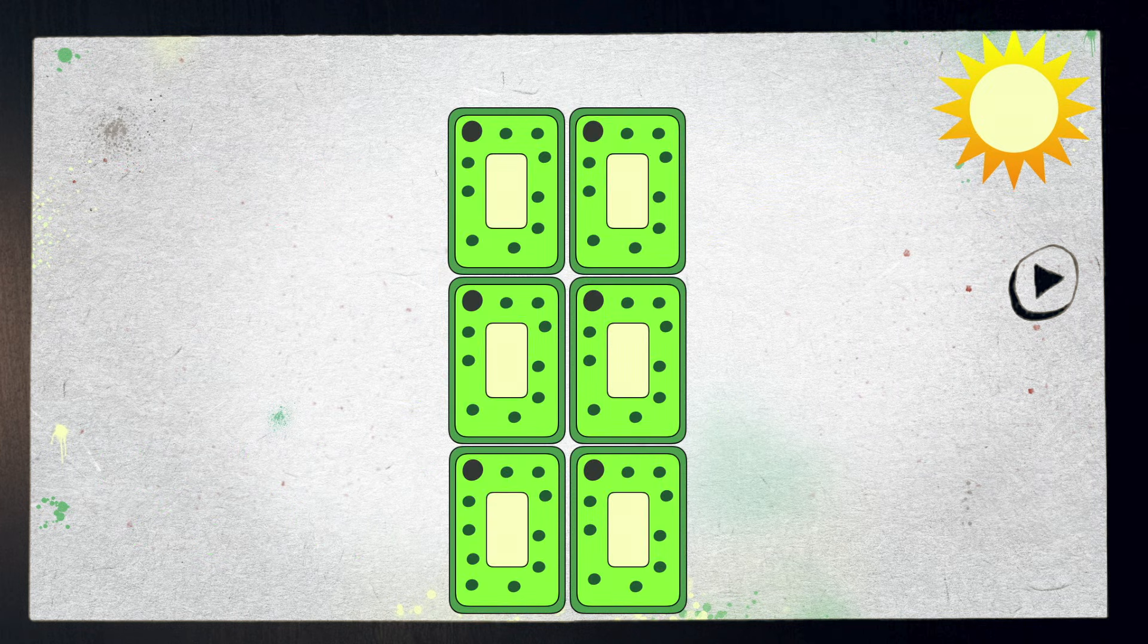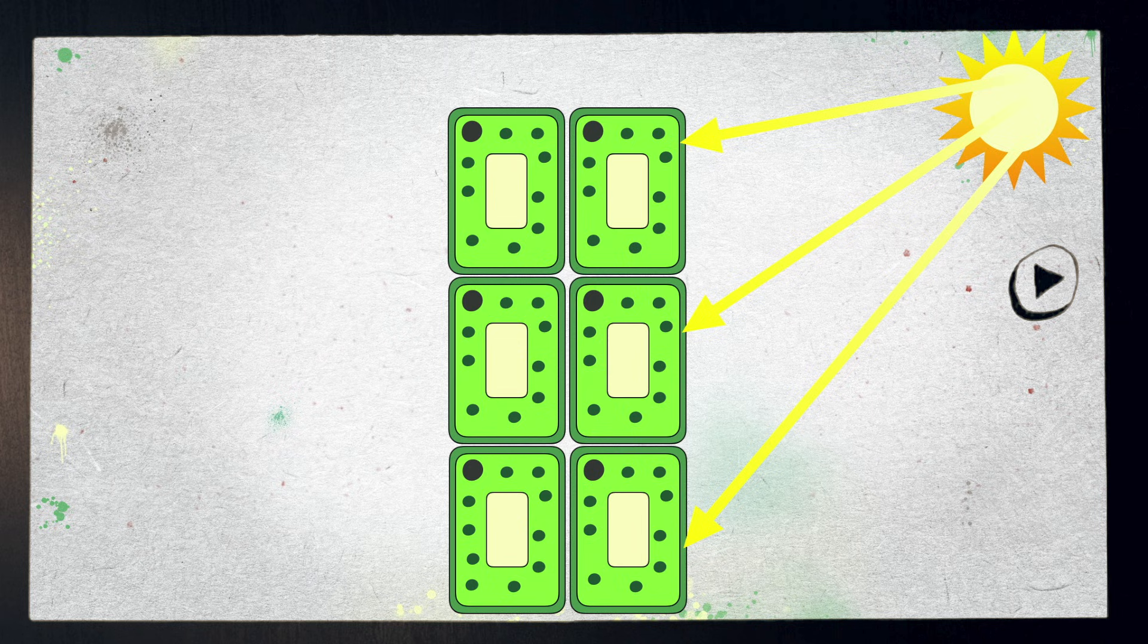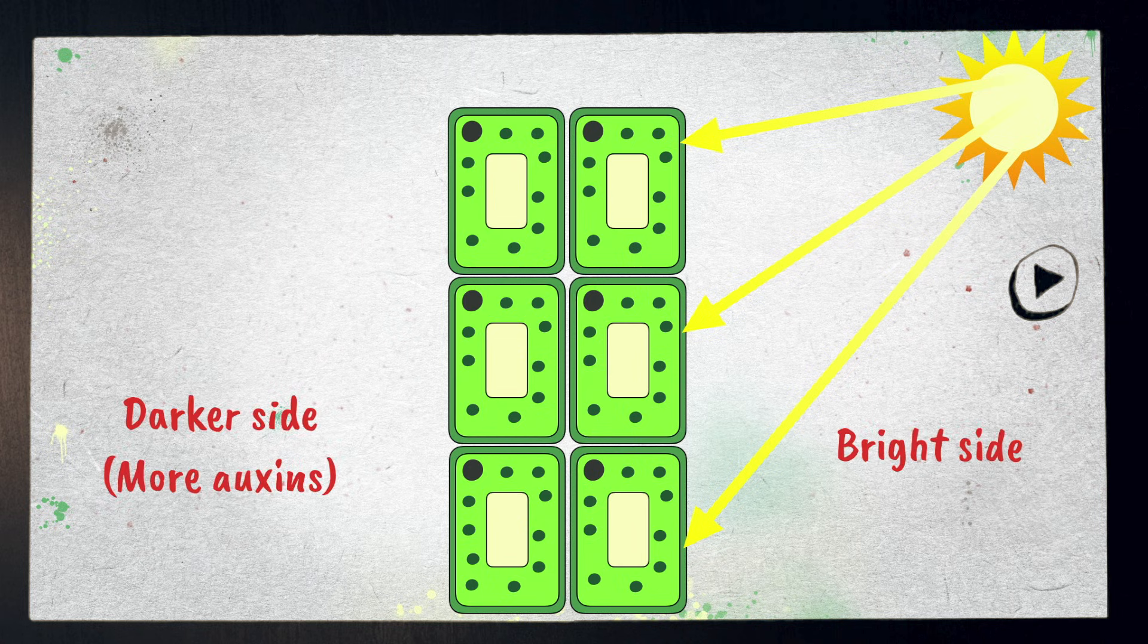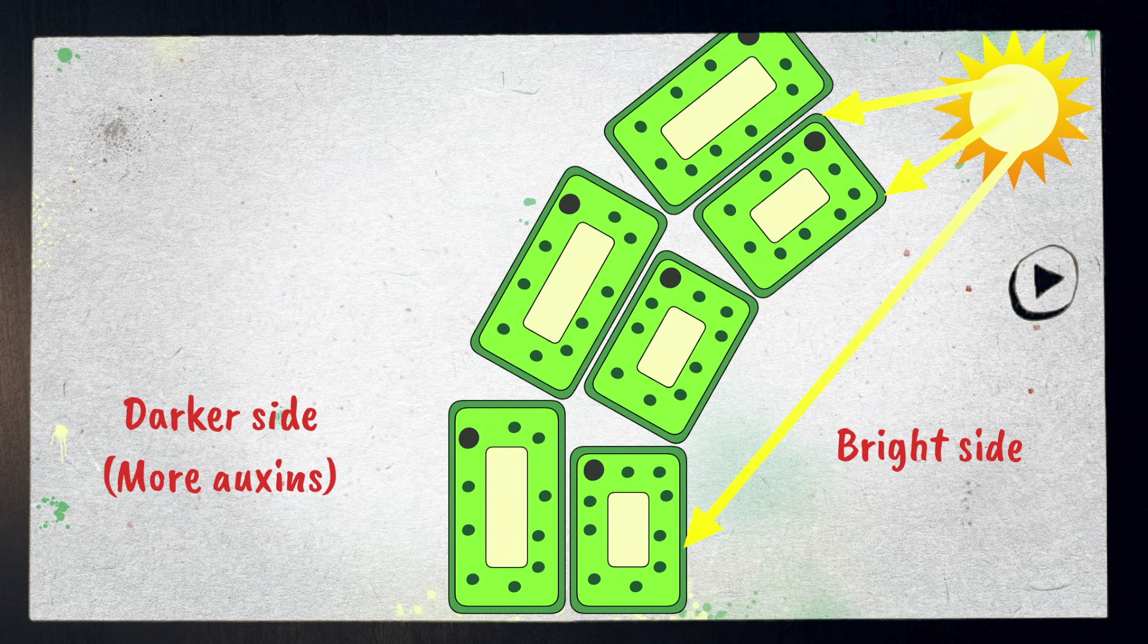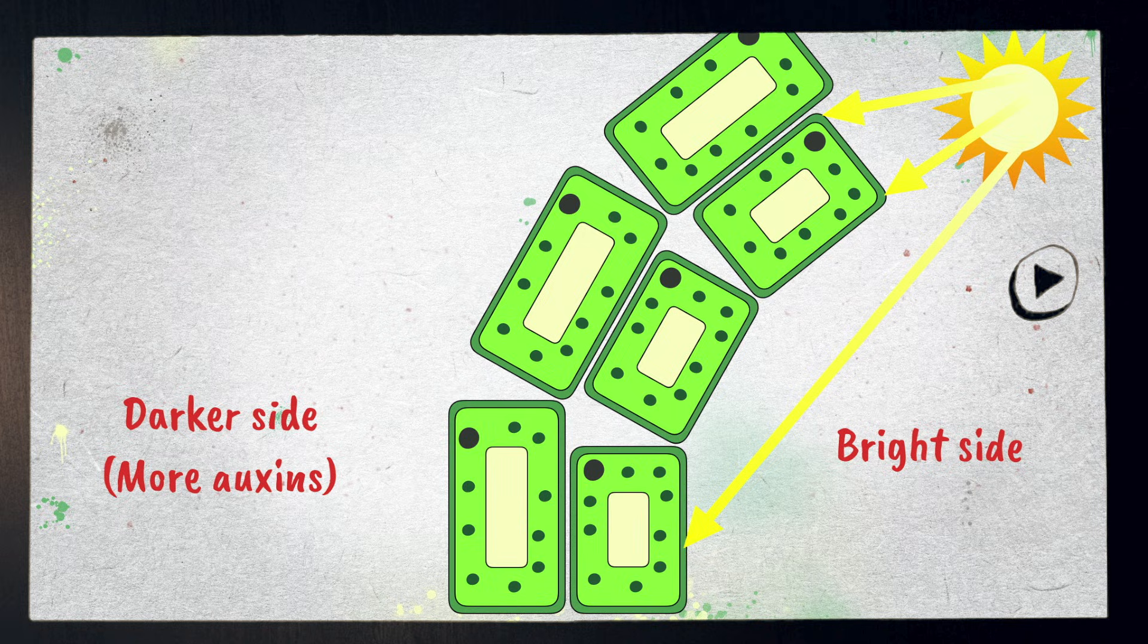Picture columns of cells side by side, and imagine only one side receives any sunlight. The cells on the darker side would accumulate auxins and grow longer, forcing the stack to bend to the side until the top of the stack is pointing toward the light.